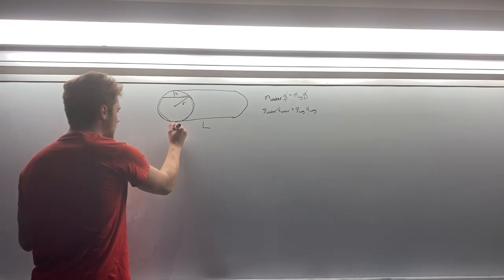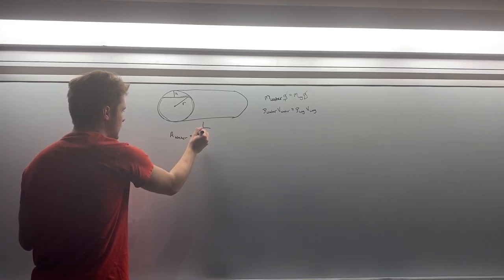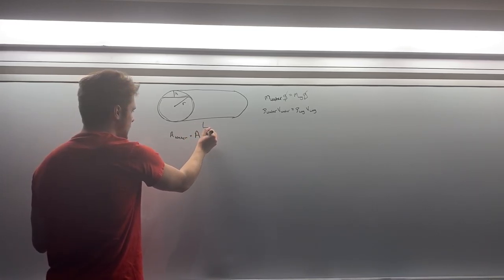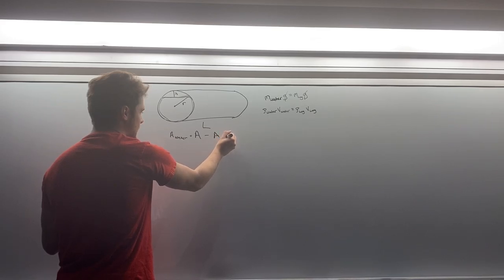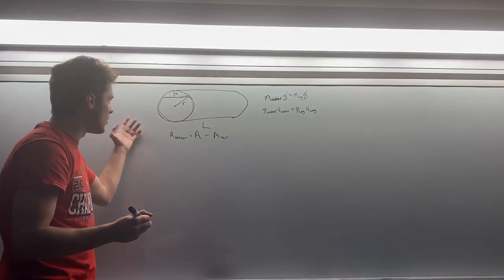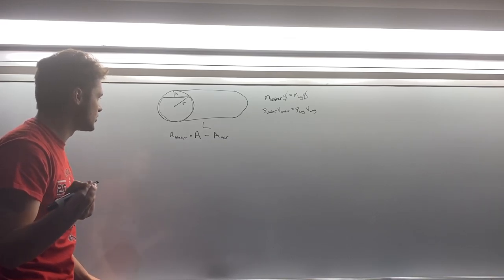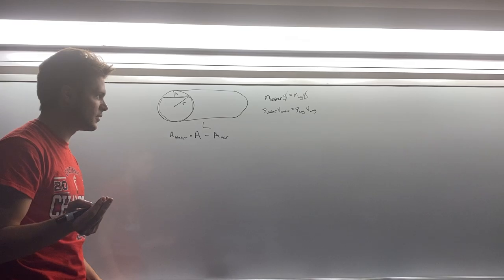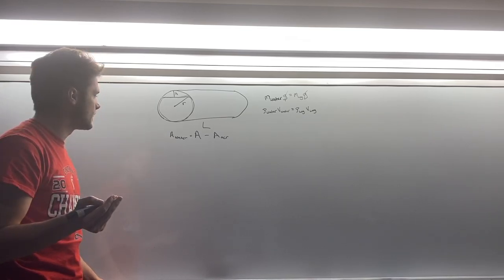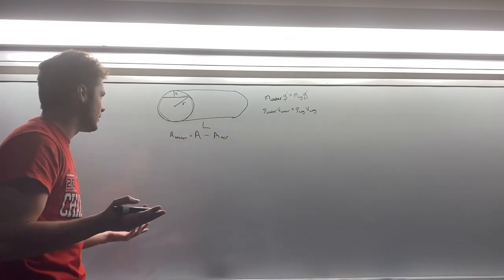The cross-sectional area of our water is going to equal the total cross-sectional area minus the cross-sectional area of the log that's out of the water in the air. We can then multiply that by L to get our volume and find the density. But we also need to find the cross-sectional area of the air portion. How do we find that?